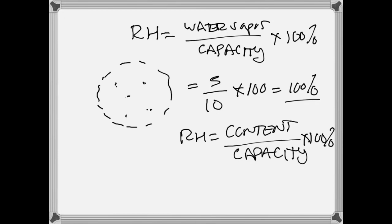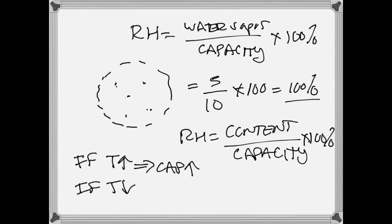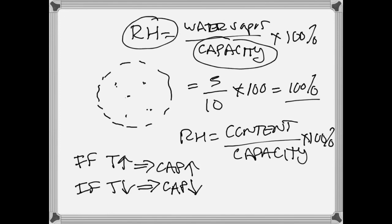One key thing to know: capacity and temperature are directly related. If the temperature of air increases, the capacity of that parcel to hold moisture increases as well. If temperature decreases, capacity decreases. But capacity and relative humidity are inversely related — so if temperature goes up and capacity goes up, relative humidity goes down; if temperature goes down and capacity goes down, relative humidity goes up.